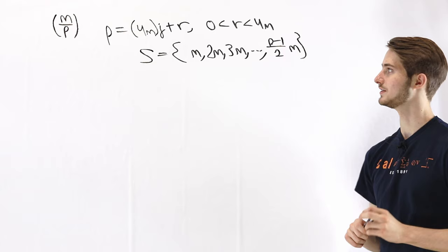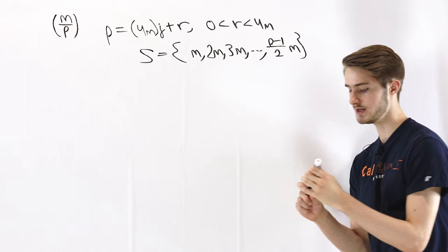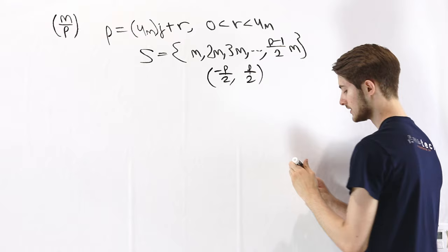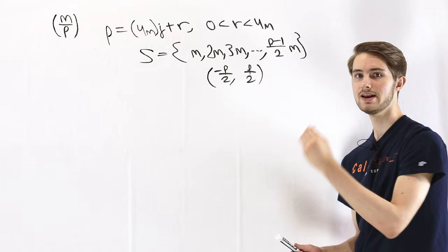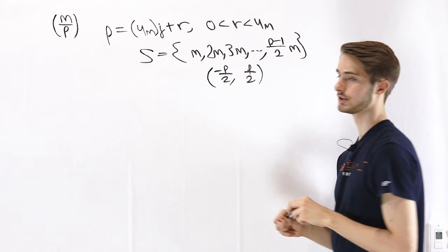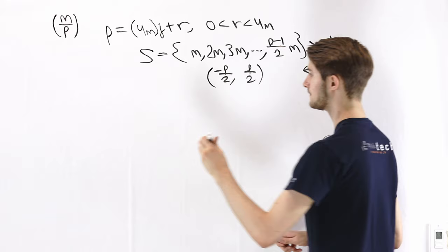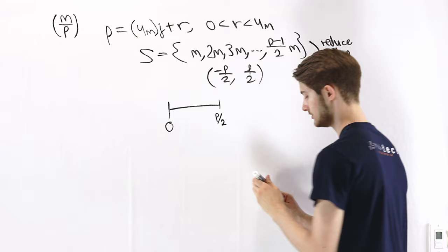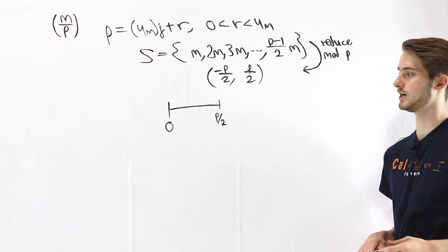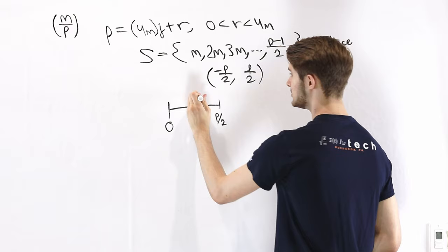To apply Gauss's Lemma, we reduce all elements of S mod p so that they lie between −p/2 and +p/2. From there, we want to count the number of elements that end up being negative. Let's look at a number line to see which ranges give positive numbers and which give negative numbers. If a number starts out between 0 and p/2, it's already in range, so it stays positive.